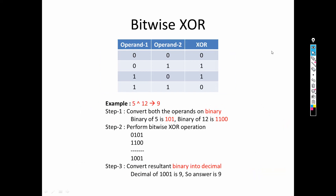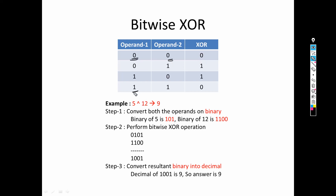Next comes bitwise XOR. Only the truth table changes — the rest of the steps are the same. In the case of XOR, when two operands are the same you get 0, and when the operands are different you get 1. That is the key rule for XOR.